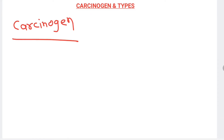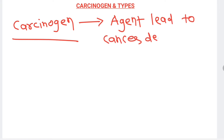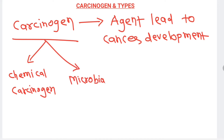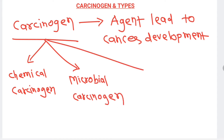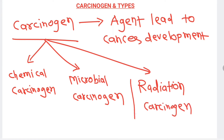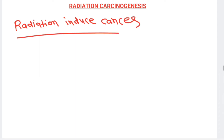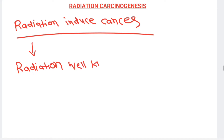Hello everyone, myself Dr. Parth Goswami and today we are going to discuss about radiation carcinogenesis. First of all, what do you mean by carcinogen? It's an agent that will lead to cancer development. Carcinogen, the cancer-causing agent, could be of three types: chemical carcinogen, microbial carcinogen, or radiation-induced carcinogenesis. Radiation is a very well-known carcinogen.